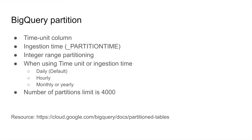You will choose an hourly partition in case you have a huge amount of data coming in and you want to process your data based upon each hour. When using hourly partition, you might want to consider the number of partitions which will be created. BigQuery limits us to 4,000 partitions, so you might want to have an expiry partitioning strategy.